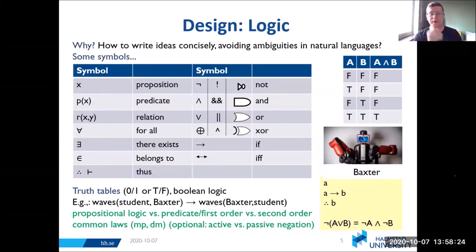First, logic. Why do we care about this? It's a way to write ideas concisely, avoiding ambiguities. You've all probably taken computer science and computational logic before, so these symbols won't seem too strange. We also look at truth tables and Boolean logic, where we deal with statements that can be either true or false, T or F, or one or zero. Here on the top right you see an example of a truth table where we're looking at A and B.